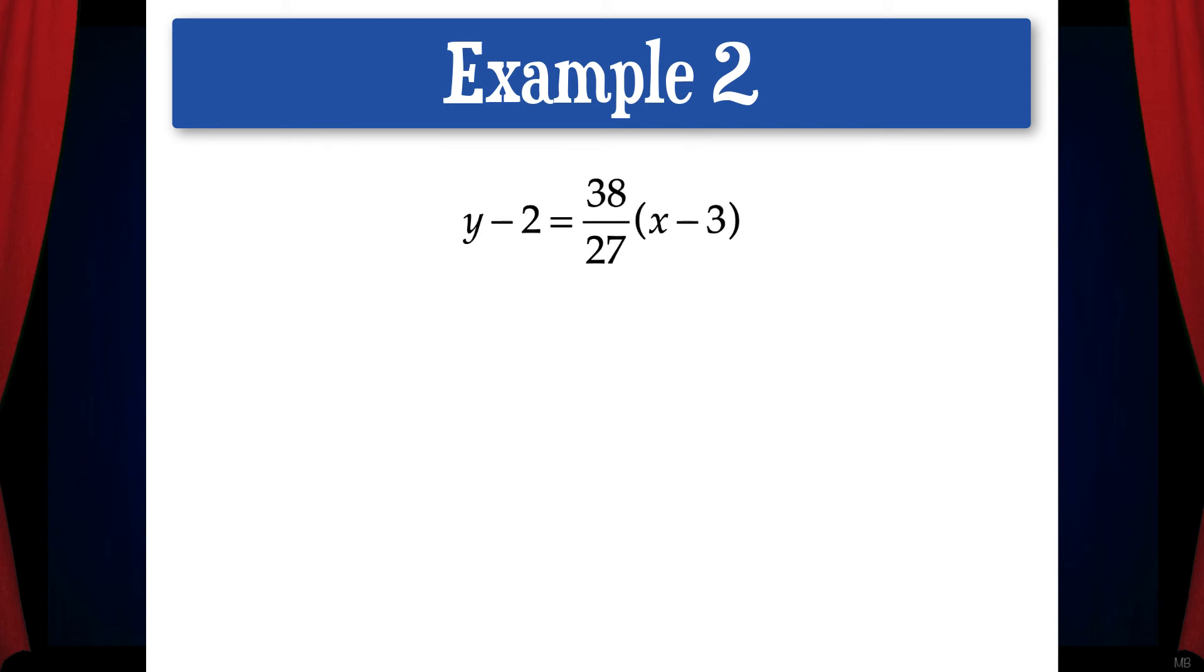Let's start with point-slope form: y minus 2 equals 38 over 27 times x minus 3. If we transfer this into L of x form, we get L of x equals 2 plus 38 over 27 times x minus 3.